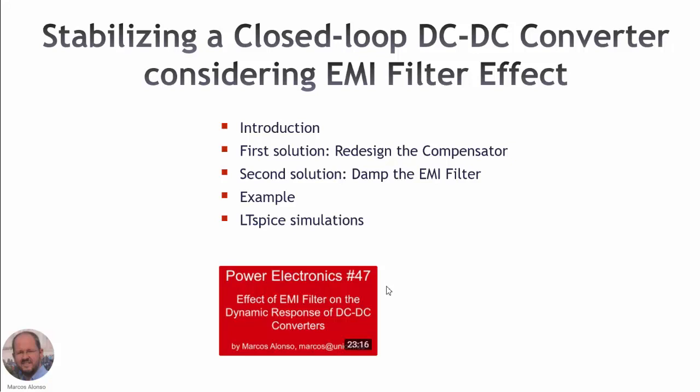This is a continuation of the previous video, Power Electronics 47, Effect of EMI Filter on the Dynamic Response of DC-DC Converters. In that video, we saw how to obtain the control-to-output transfer function of a DC-DC converter including the effect of the EMI filter, and we investigated how the EMI filter affects the behavior of the converter operating in closed loop.